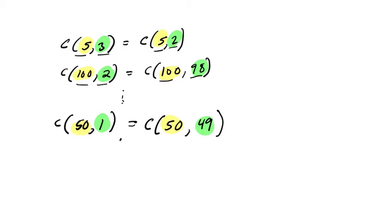And in general, what we can say is that if you have n objects, you're picking r of them, it's going to equal when you have n objects and you're choosing n minus r of them. And that's just a fancy way of seeing what we have in this pattern.